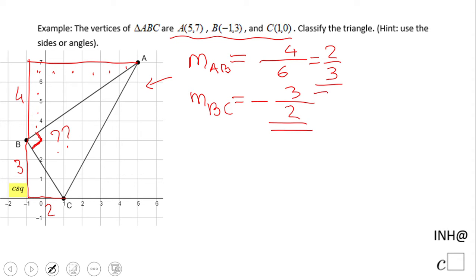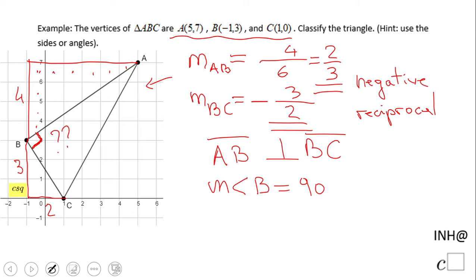What do you notice about these guys? They are negative reciprocal. Which means that AB perpendicular on BC, the segments or the line either way. Which means angle B, the measure of angle B to be correct is 90 degrees when the two lines are perpendicular.